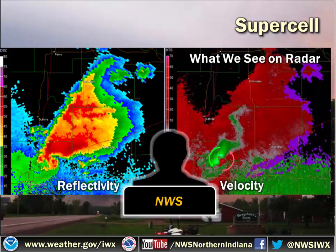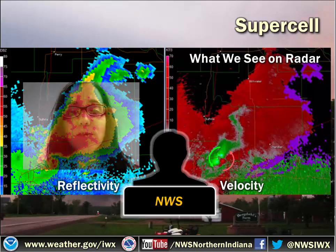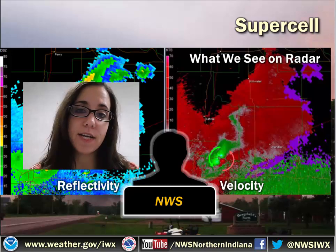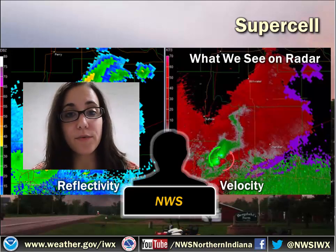On radar, if you see something that looks more like a kidney bean with a little hook at the end — what we call a hook echo — that's typically where you're going to find your tornado. When you compare that with the velocity data from the radar, you can see that reds and greens that are really close to one another indicate really fast rotation there. That signifies that something is going on — a tornado of some sort, or at least rotation that could produce one. So when we issue our warnings, you'll see it says 'Doppler radar indicated' — and that's what we're keying off of.